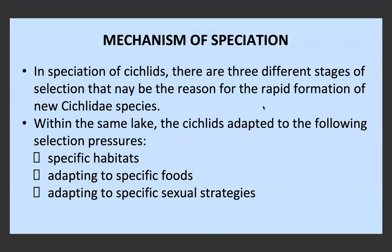In the speciation of cichlids, there were three different stages of selection that scientists believe could be the reason for the rapid formation of new cichlid species. Within Lake Malawi, the cichlids adapted to the following selective pressures: specific habitats — such as the bottom of the lake, the top of the lake, near the lake edges; specific food types — such as other fish, fish eggs, plants, soil, bacteria, etc.; and specific sexual strategies.